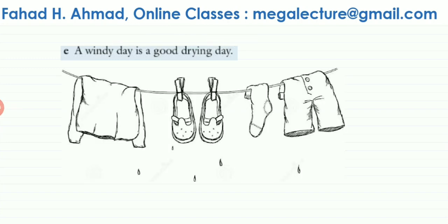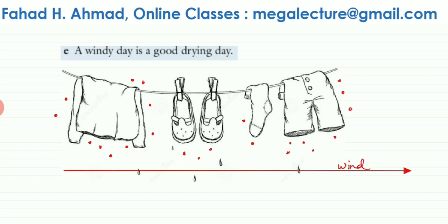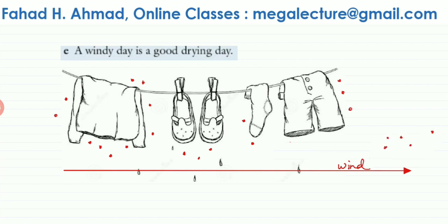The last part of the question asks us to explain why a windy day is a good drying day. There is a clothesline with wet clothes. Wind helps dry the clothes faster. The water molecules — represented as red particles — evaporate and change into gaseous state but hover around the wet clothes. A strong wind blowing takes these evaporated water molecules away.